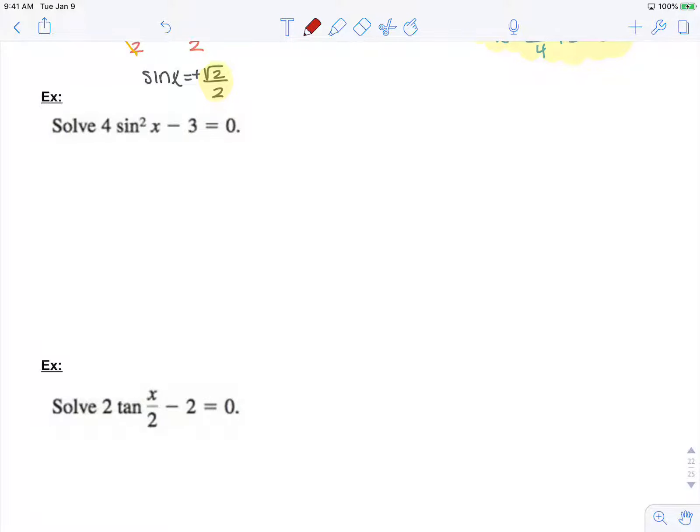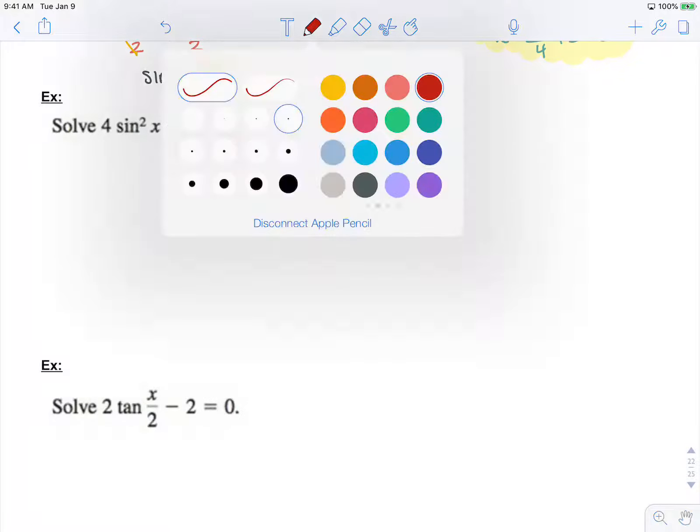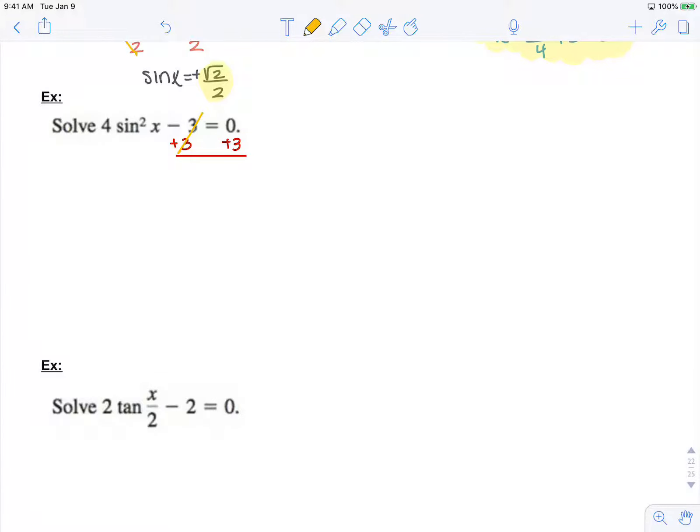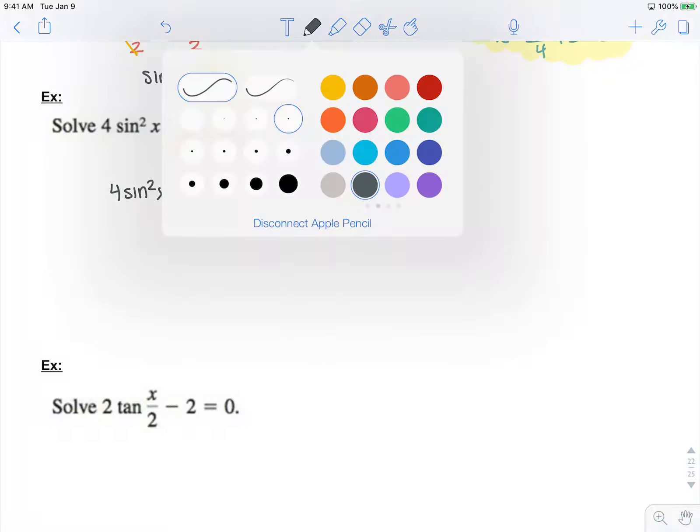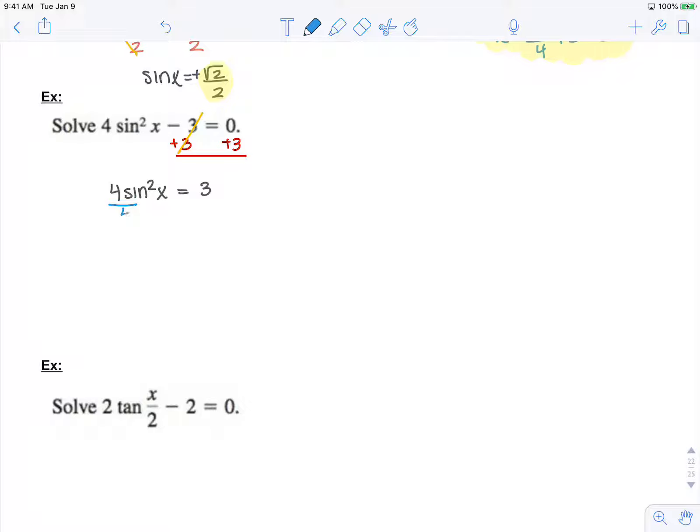Here in our next example, we should begin by isolating our trig function. I'm going to add 3 to both sides first. This cancels.